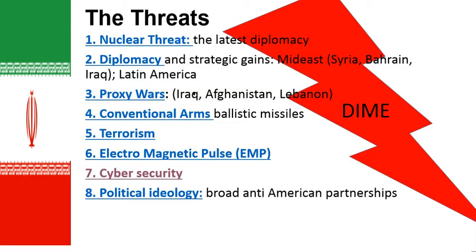If we take a quick look here at the threats, we see that they're quite broad — everything from a nuclear threat to diplomatic threats to proxy wars, conventional arms, acts of terrorism, EMP potential attacks, cybersecurity issues and attacks, and political ideology and information operations used to undermine the United States and its interests. These are all particular threat areas that have been assessed, and so let's begin to broach the arguments for these topics.